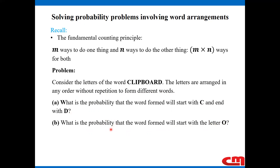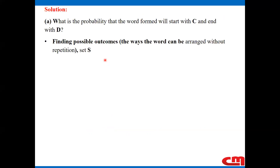Now let us give solution to the problems. We start with A: what is the probability that the word formed will start with C and end with D? Probability is a fraction between zero and one. The numerator represents the favorable outcomes and the denominator represents the possible outcomes. So let us start by finding the possible outcomes — that is, the ways the word can be arranged without repetition, and we call that set S.